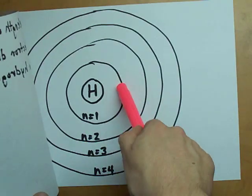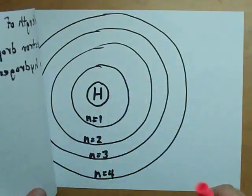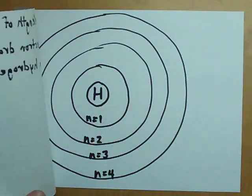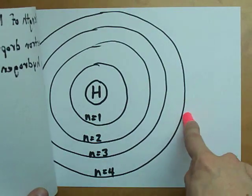When it does that though, it has to absorb some energy. Then when the electron drops back down, it has to give off energy. So let's say it jumped up to the fourth energy level. We don't know how much energy that took.